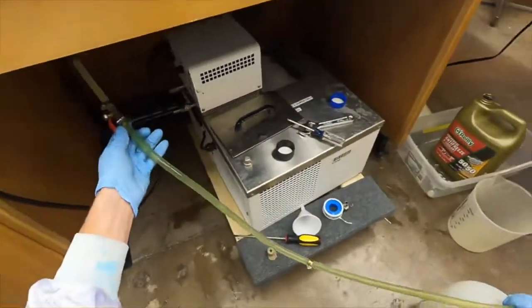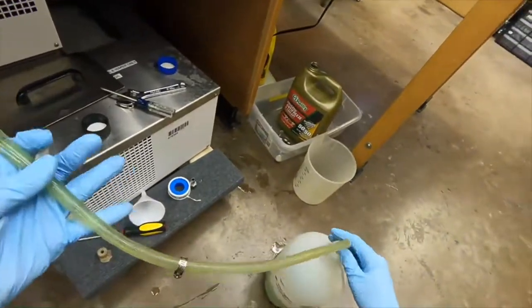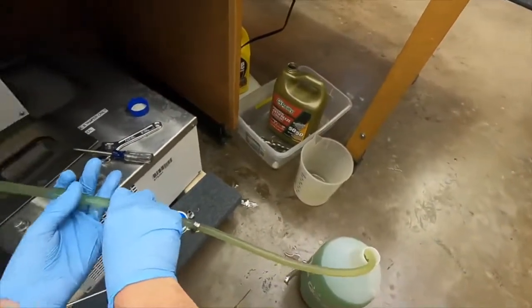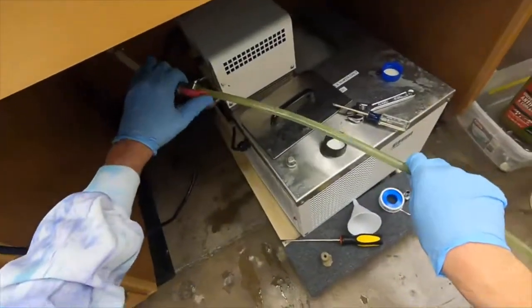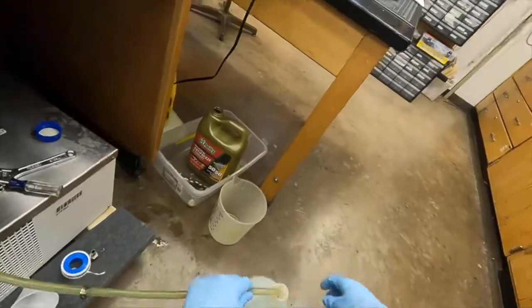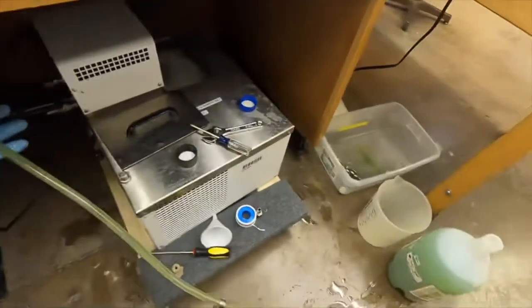Then you open this valve up and this should just start draining. Once this is about full, you just clamp off this valve again and then switch to the other bucket, and then you just do the same thing until it's drained.